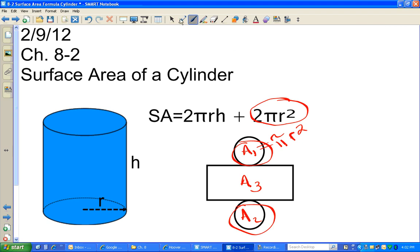So that must mean that this other piece, 2 pi r h, is giving us the third area. And let's think about how that works.